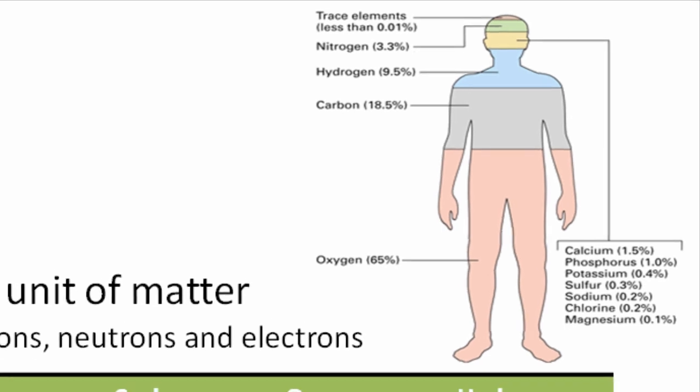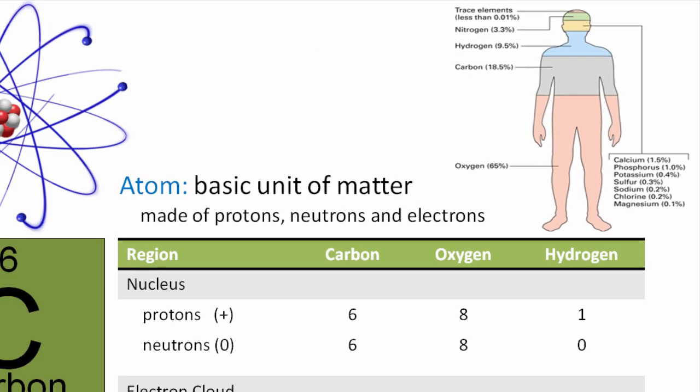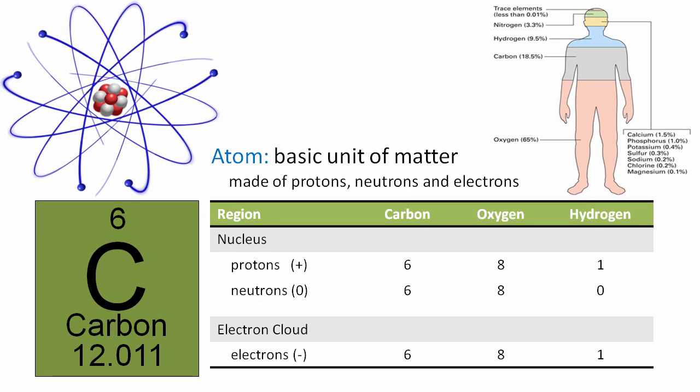But it's not just atoms and elements for which biologists are concerned about. Biology is really concerned about how chemical reactions take place and how chemical bonds happen. So here we have an example of carbon and hydrogen. And alone, they're not very useful, but in chemical bonds, they do an awful lot.